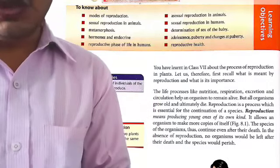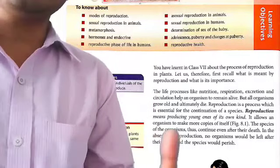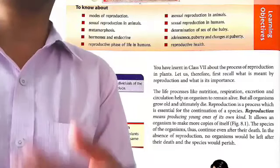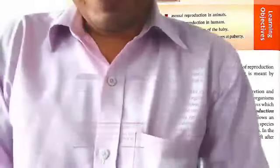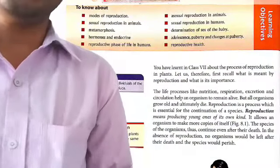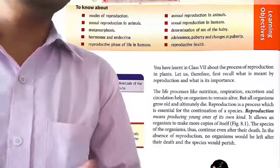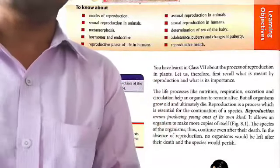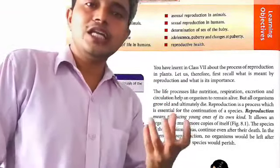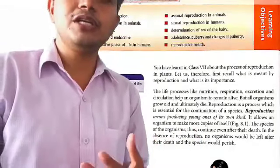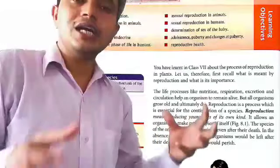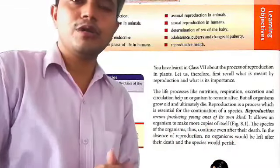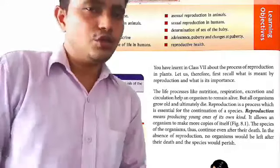The species of an organism continue even after the individuals die. These species are being saved — for example, endangered species like tigers, when they reproduce, they will reproduce and increase their numbers. So these are all topics of reproduction.